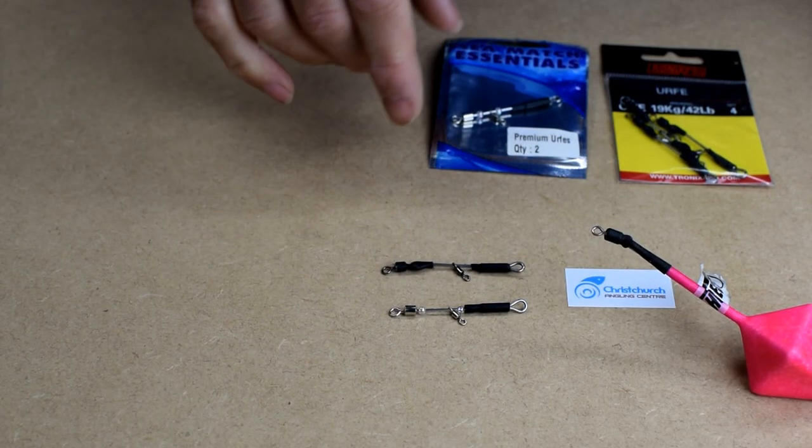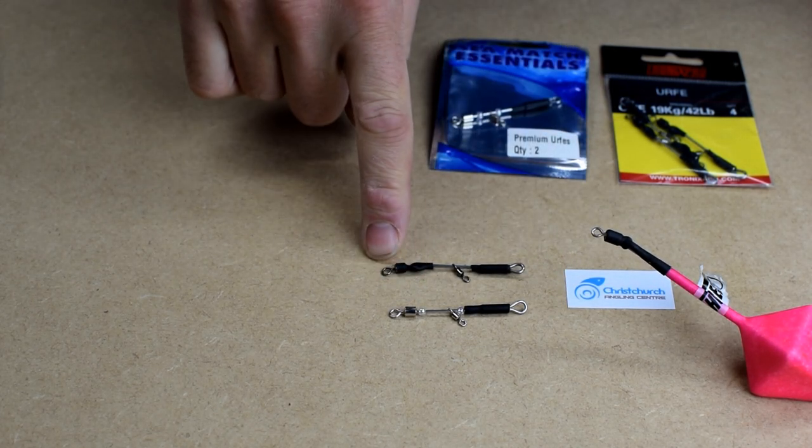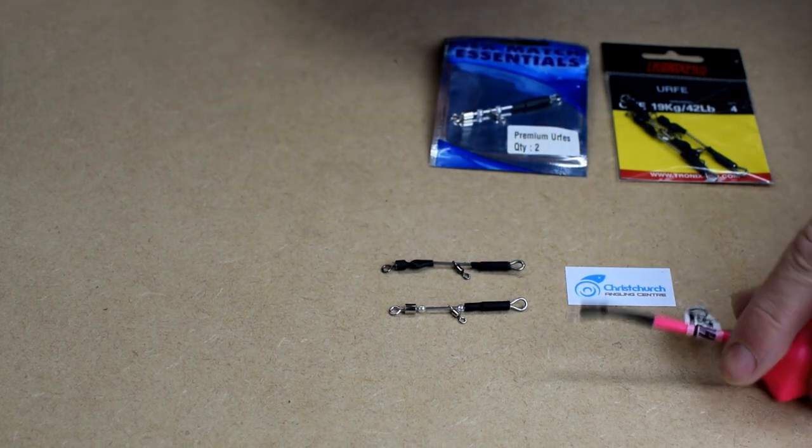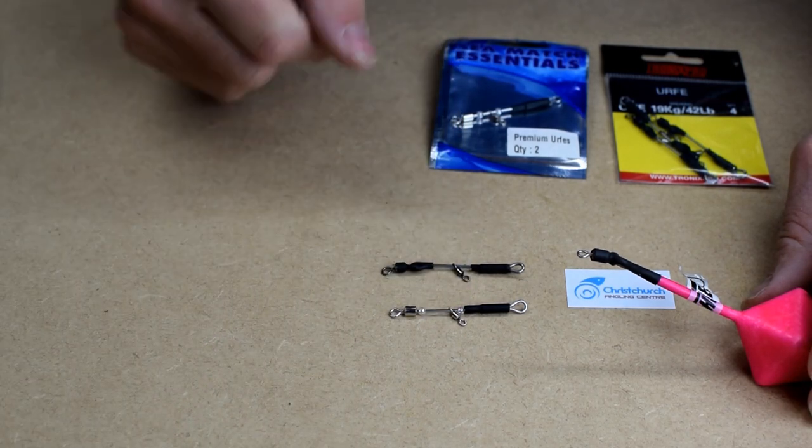OK, so the earth clip itself is a very simple bit of kit. It's a small piece of metal with a swivel at the top to attach your shock leader to, a clip down the bottom where your lead goes, and a swivel in the middle where your snood goes.